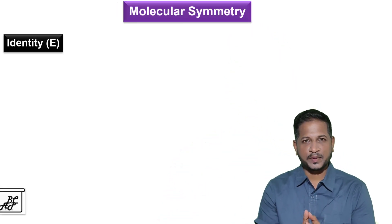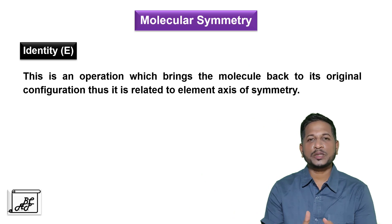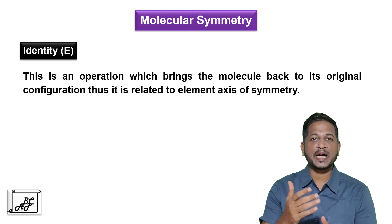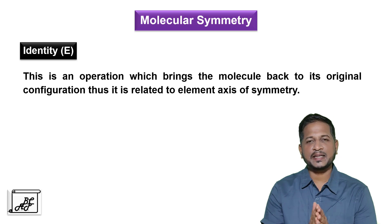The identity element of symmetry is the simplest element of symmetry — it is to do nothing with the molecule, but to rotate the molecule through 0 degrees or 360 degrees. So it brings back the molecule into its original configuration, or it shows the identical image directly. It is called the identity element of symmetry.